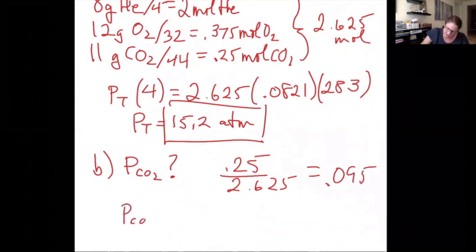So to get the partial pressure of CO2, I'm going to take that 0.095 and multiply it by the total pressure, which gives me 1.45 ATM.